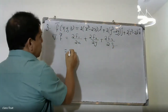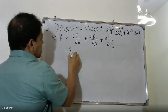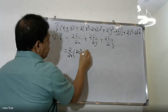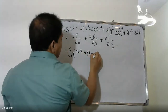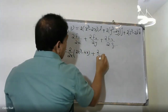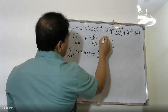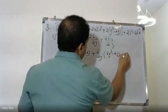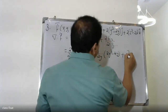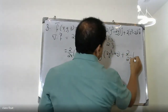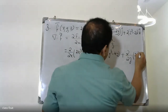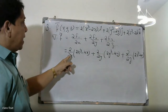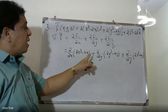Computing the partial derivatives: ∂F₁/∂x = 6x² - 4, ∂F₂/∂y = 6y² - 4, ∂F₃/∂z = 6z² - 4.